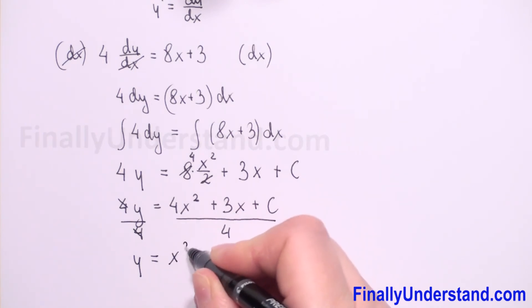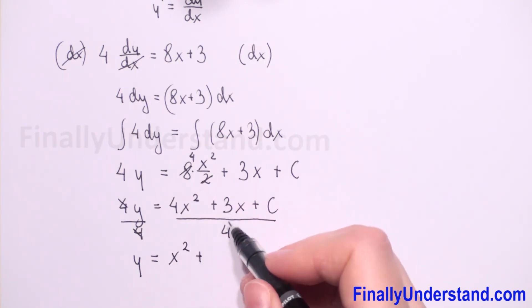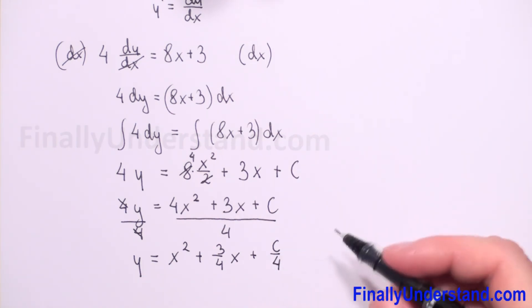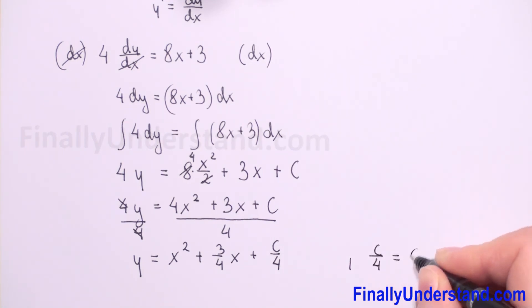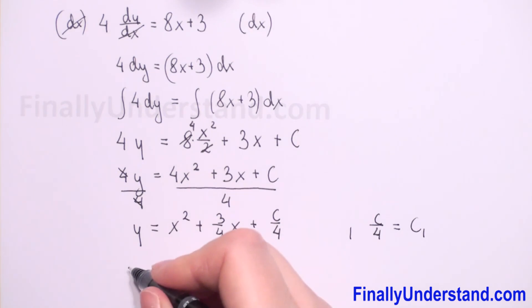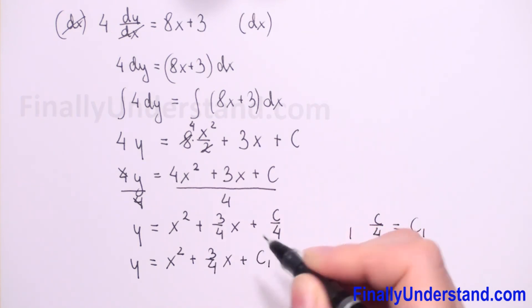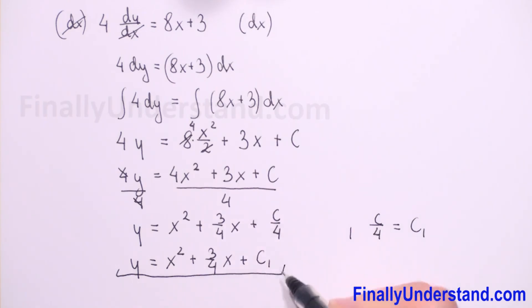Plus 3 divided by 4 will be 3 over 4x, and we have c over 4. So c is a constant, and when we divide both sides by 4, c over 4 is also a constant, so we can write that c over 4 equals our c1. So we have now y is equal to x squared plus 3 over 4x plus c1. This is my solution.